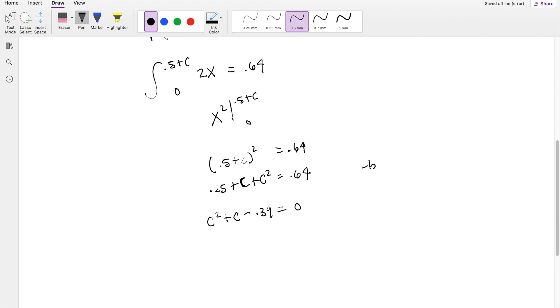Do you remember the quadratic formula? Given it's like ax squared plus bx plus C, x is equal to negative b plus or minus square root of b squared minus 4ac divided by 2a.